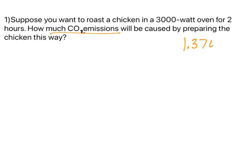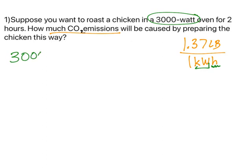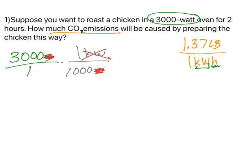We're talking about electricity, so we use 1.37 pounds per one kilowatt hour. I need kilowatts and I need hours. I know 3,000 watts — now, how do I go from watts to kilowatts? I know that 1,000 watts is one kilowatt. That conversion takes you out of watts and puts you into kilowatts, allowing the kilowatts to cancel out. You need that.